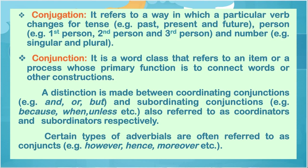Conjunction — it is a word class whose primary function is to connect words or other constructions. A distinction is made between coordinating conjunctions — for example, 'and,' 'or,' 'but' — and subordinating conjunctions — for example, 'because,' 'when,' 'unless,' etc. — also referred to as coordinators and subordinators respectively. Certain types of adverbials are often referred to as conjuncts — for example, 'however,' 'hence,' 'moreover,' etc.